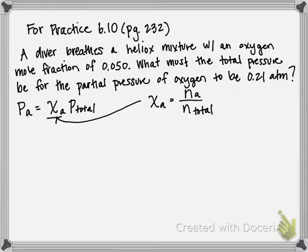So let's look at an example utilizing this equation. Let's say we have a diver that breathes a heliox mixture with an oxygen mole fraction of 0.050. What must the total pressure be for the partial pressure of oxygen to be 0.21 atm?